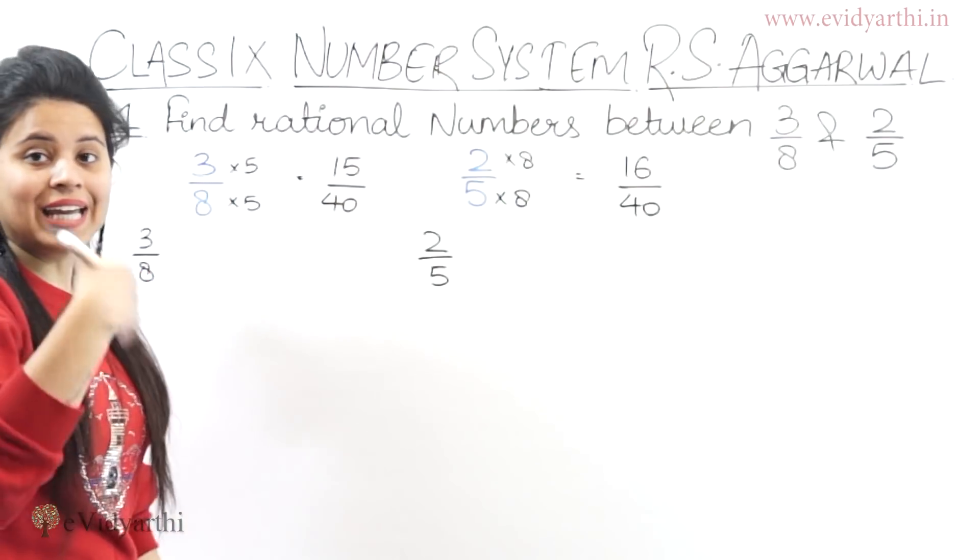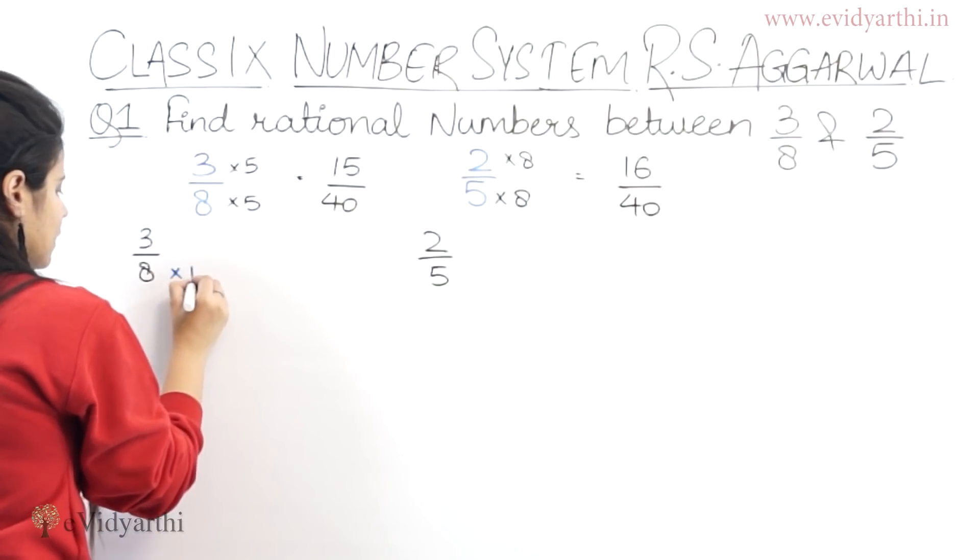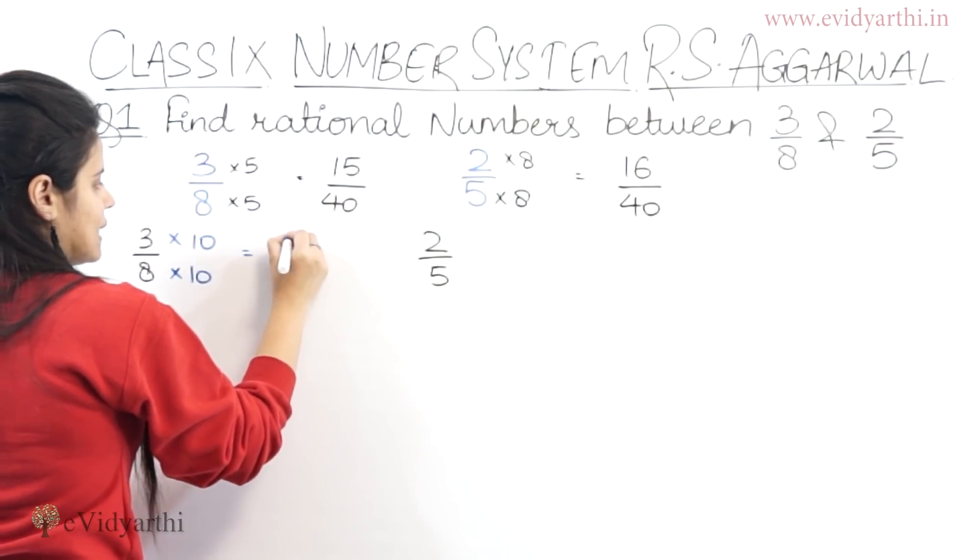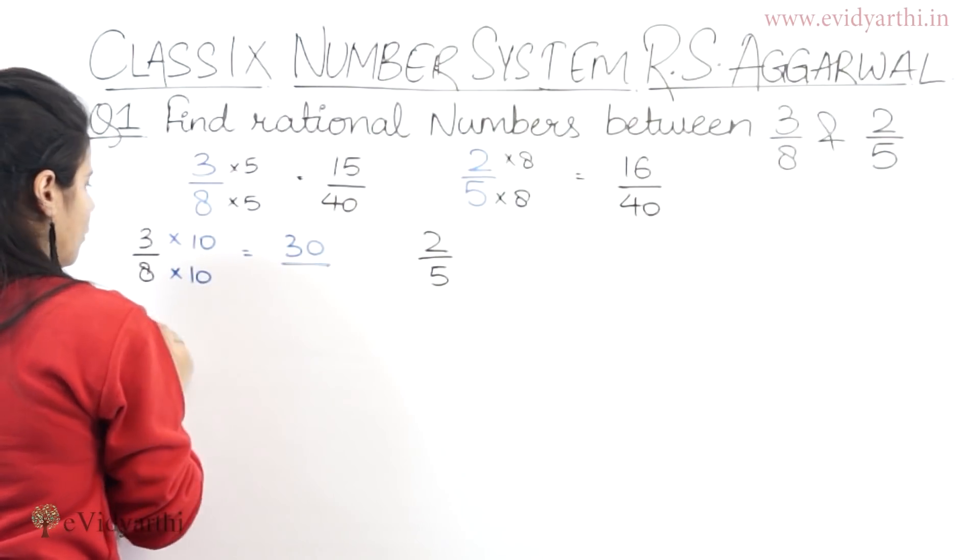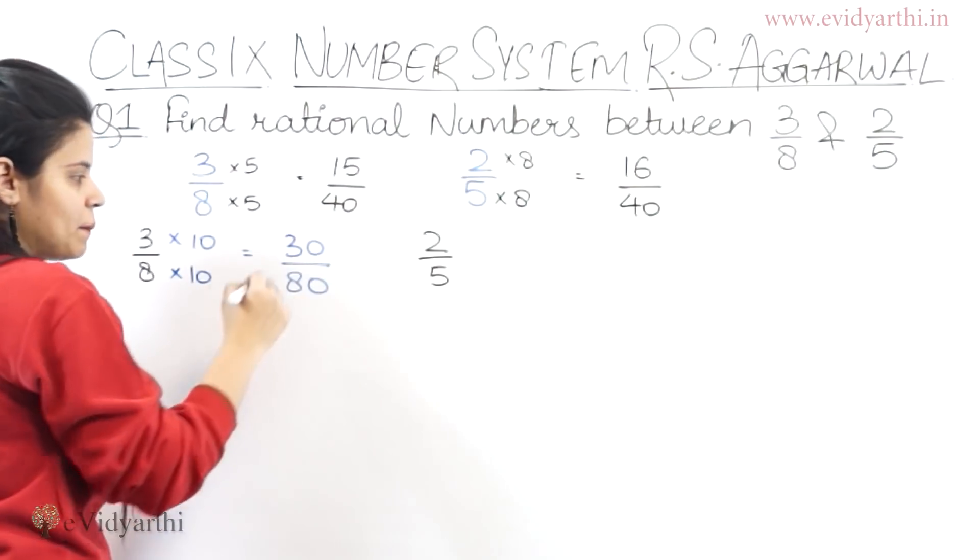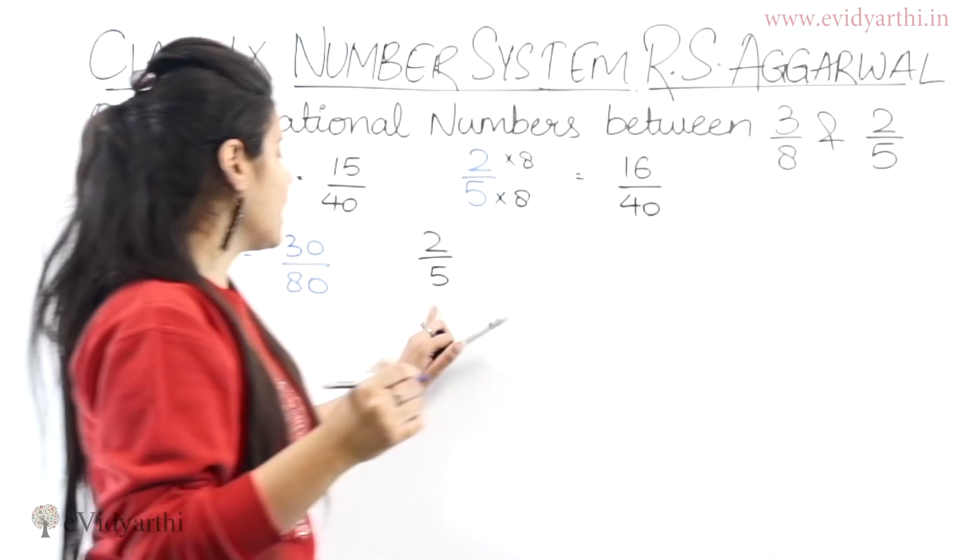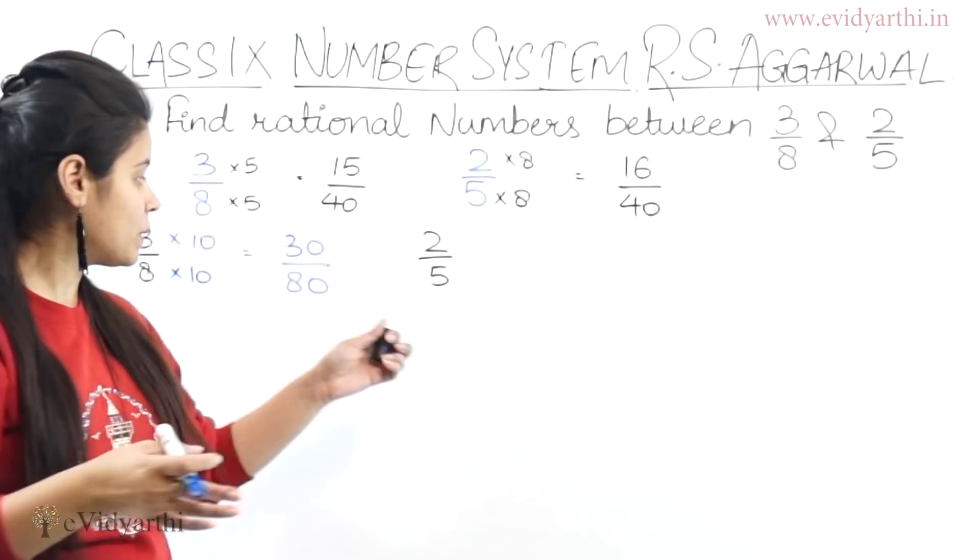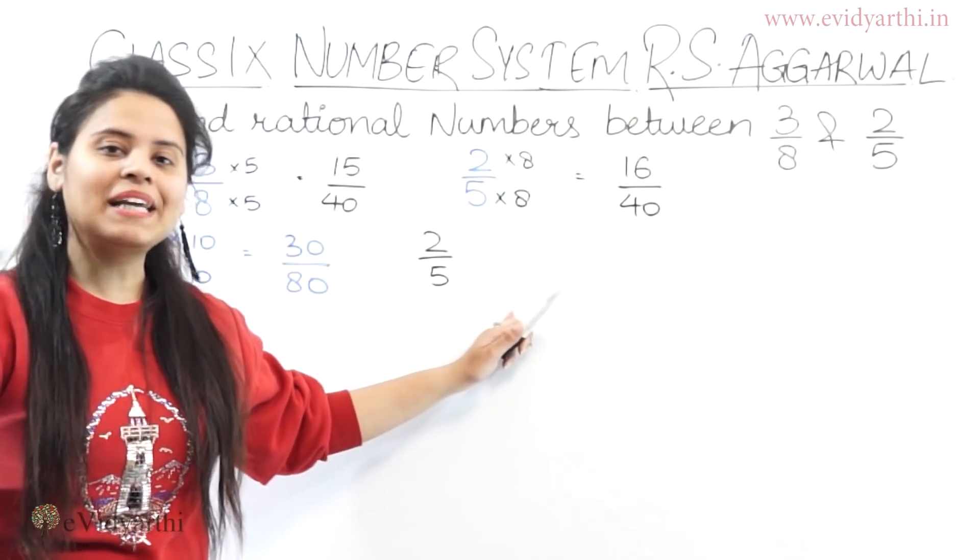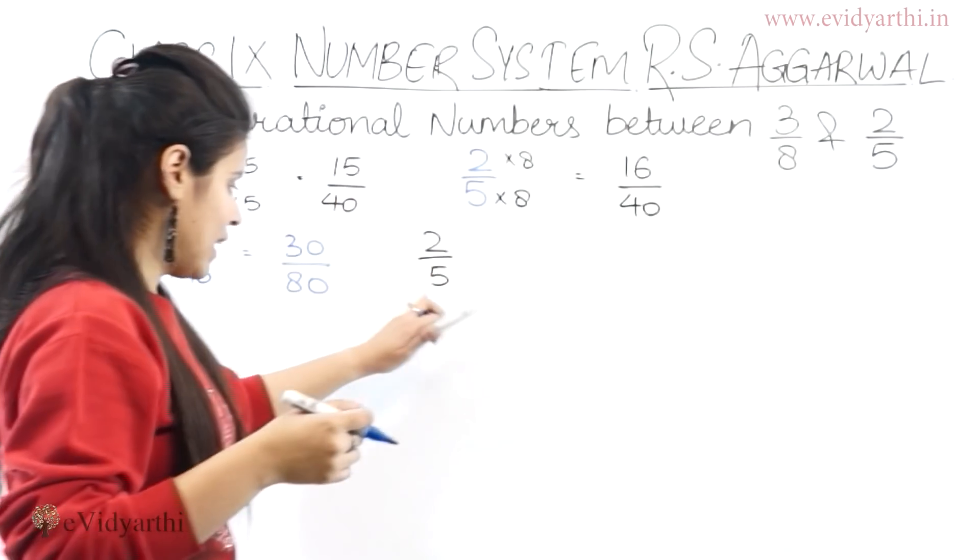So now, we need to make this 8 by 10. So, we need to multiply 10 by 10. So, this will be into 10. Again, this will be 10 by 10. So, 3 into 10 is 30. Upon, if we do here, 8 into 10 is 80. So, this will be 30 upon 80. Now, 5 by 10 by 10. So, we will see the rest of the tables. We will multiply by which we multiply by 80.